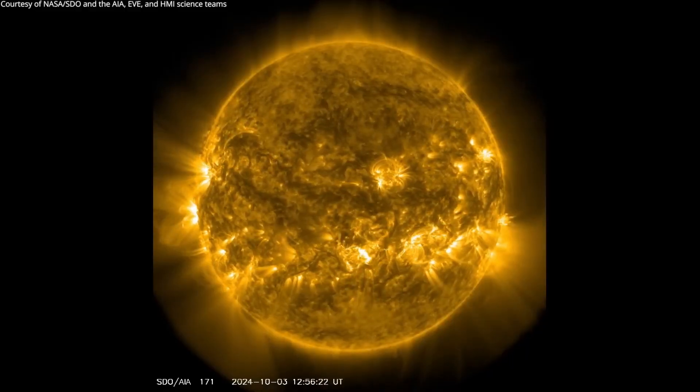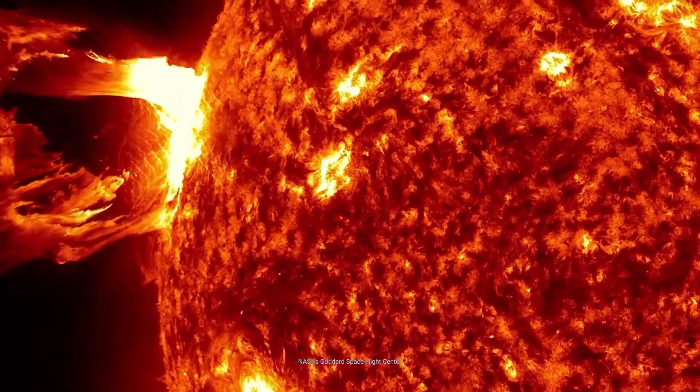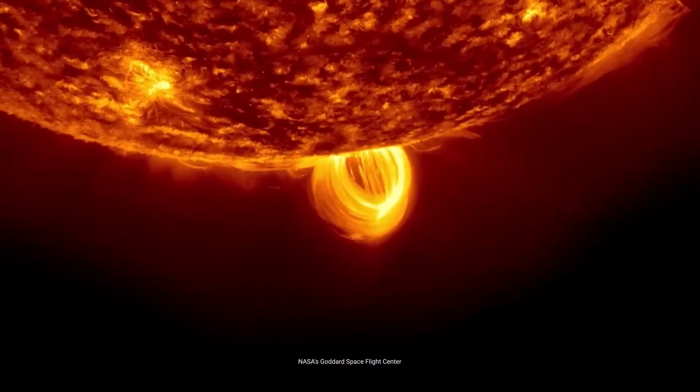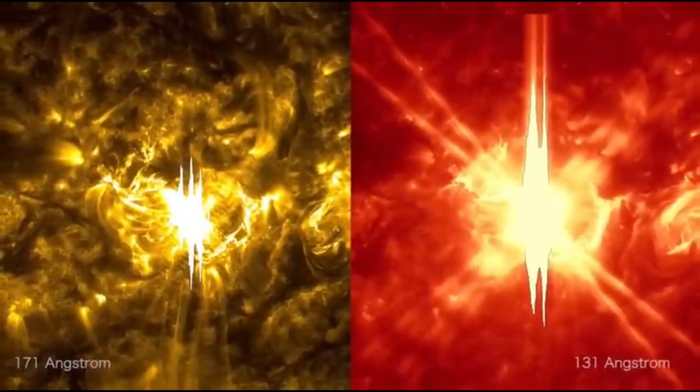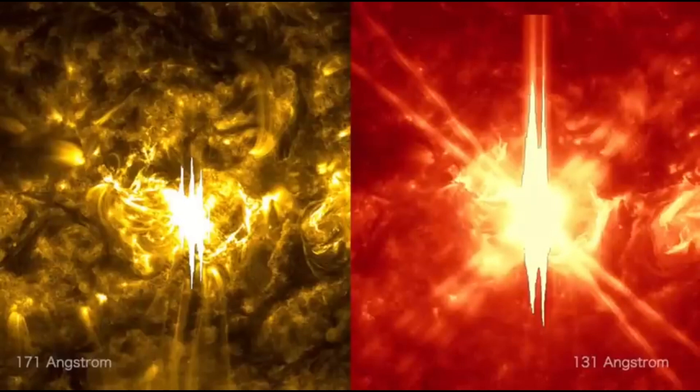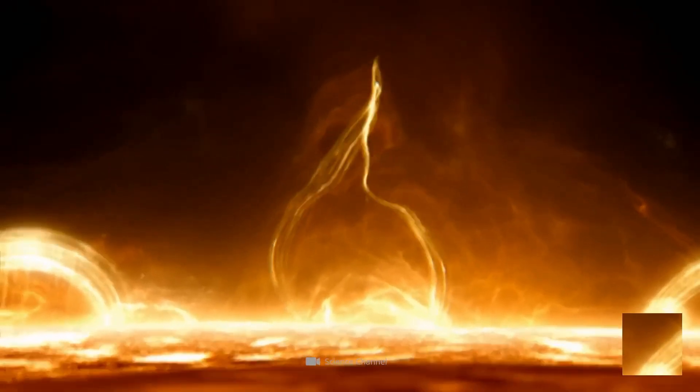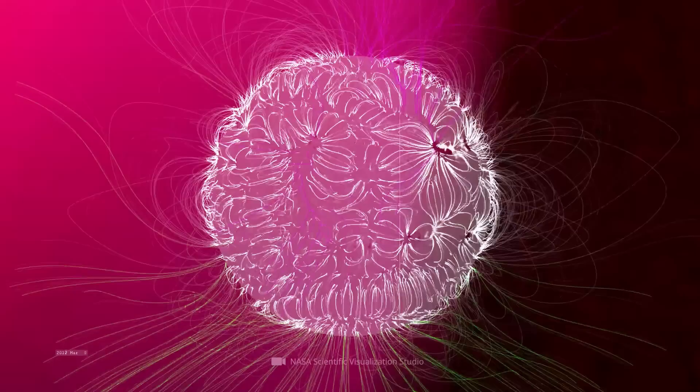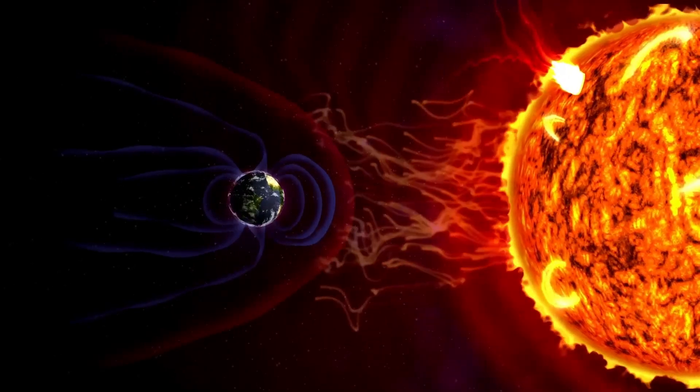The sun may look like a bright constant ball of light, but it's far from steady. Every 11 years or so, it goes through a dramatic transformation known as the solar cycle. This cycle, which impacts our planet in many ways, involves changes in the sun's activity, magnetism, and even appearance.